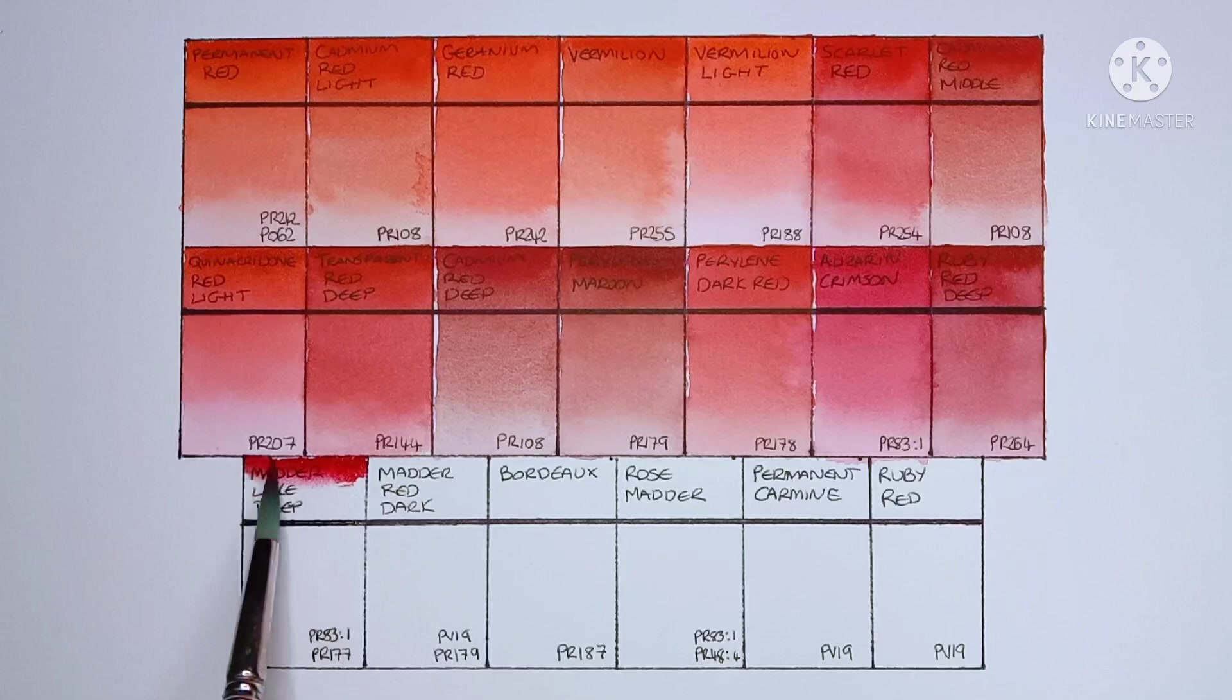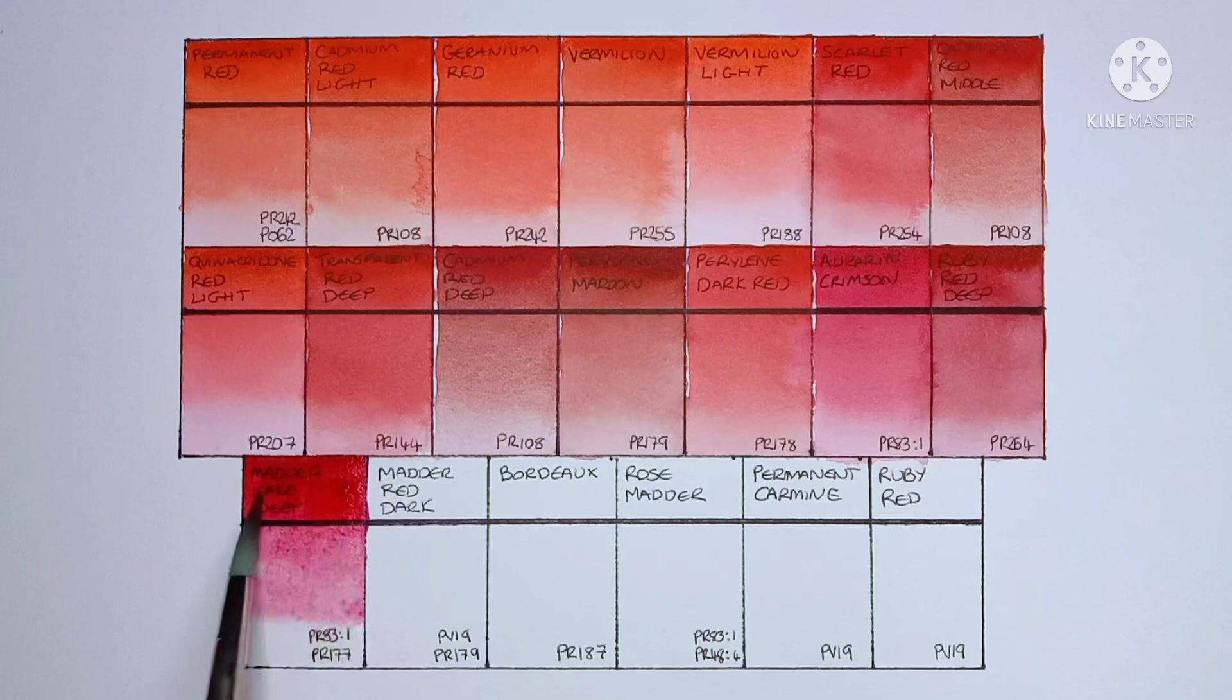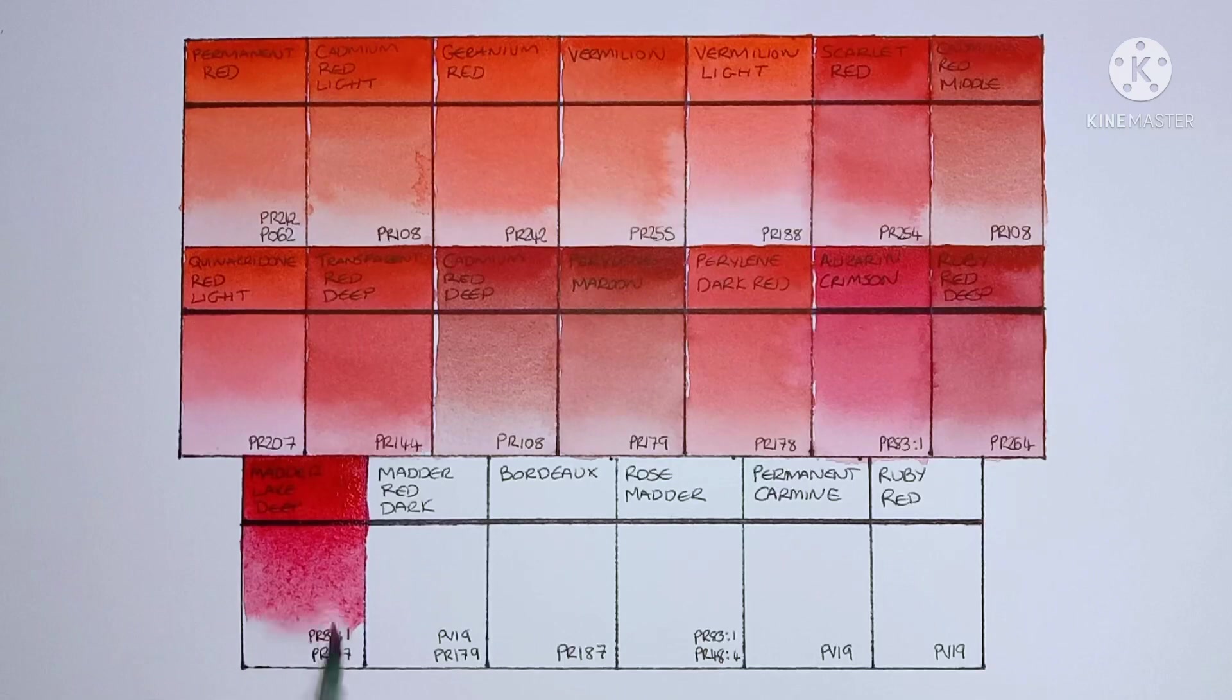Next up is madder lake deep, and it's made from PR83-1 and PR177. Yeah, it's a lovely color, but it contains PR83, so everything I said about the alizarin crimson paint also applies to this one.